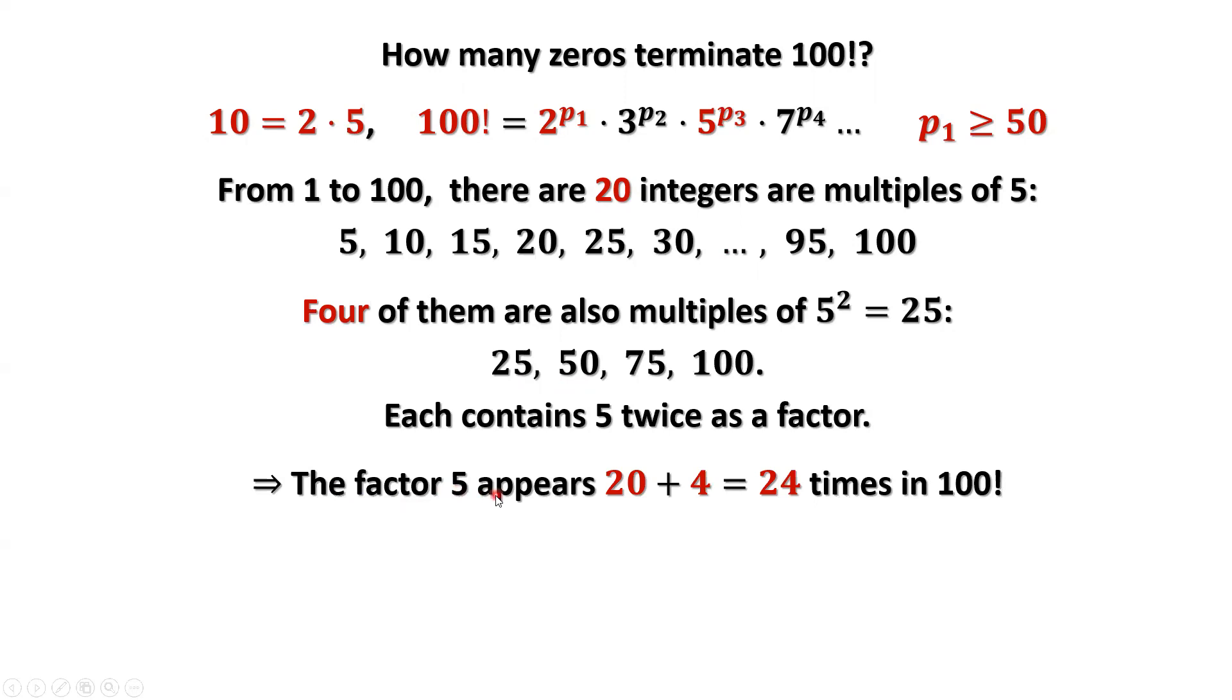The factor of 5 appears totally equals 20 plus 4, which is 24. Why? Here we have 20. Here we have 4 extra. Totally should be 24.